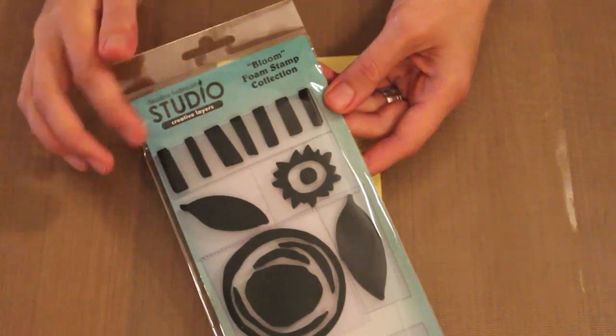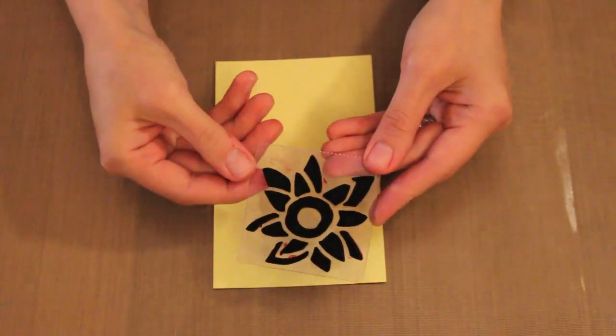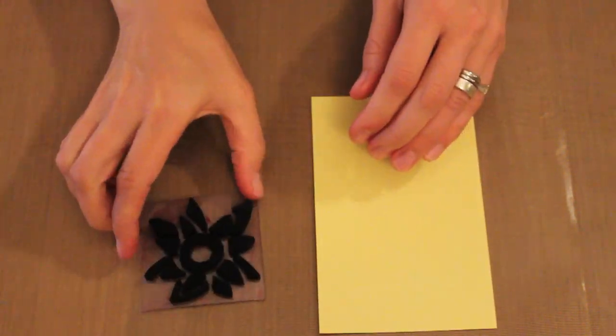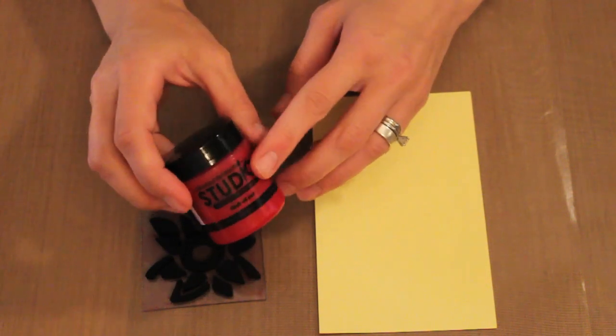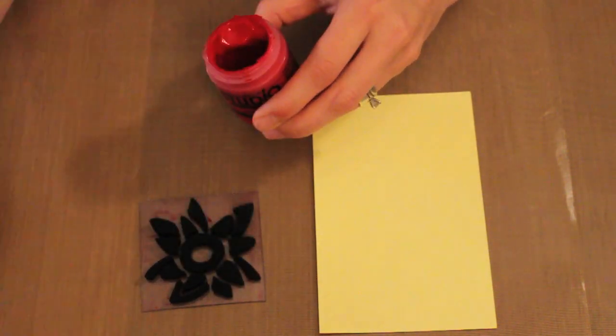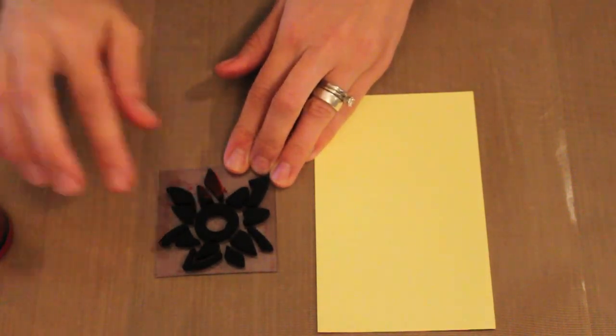The stamp that I'm using is from another Claudine product, this is the Bloom foam stamp collection and this is the flower stamp that I'm using. It's a foam stamp already on a plastic block, really lightweight acrylic. I'm going to put on more of the Dash of Red paint.